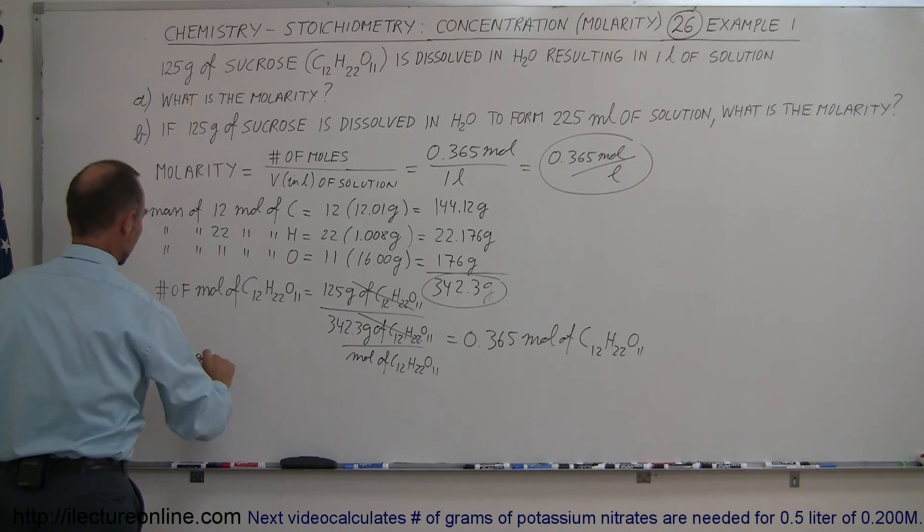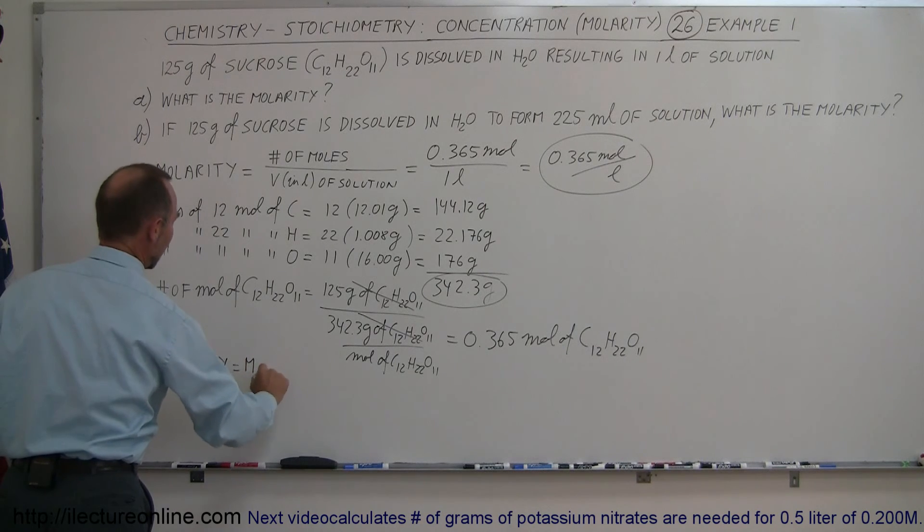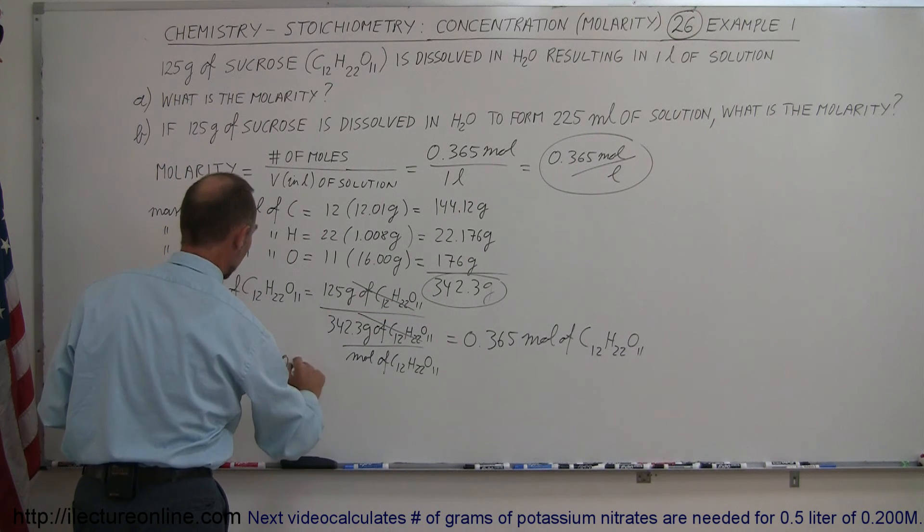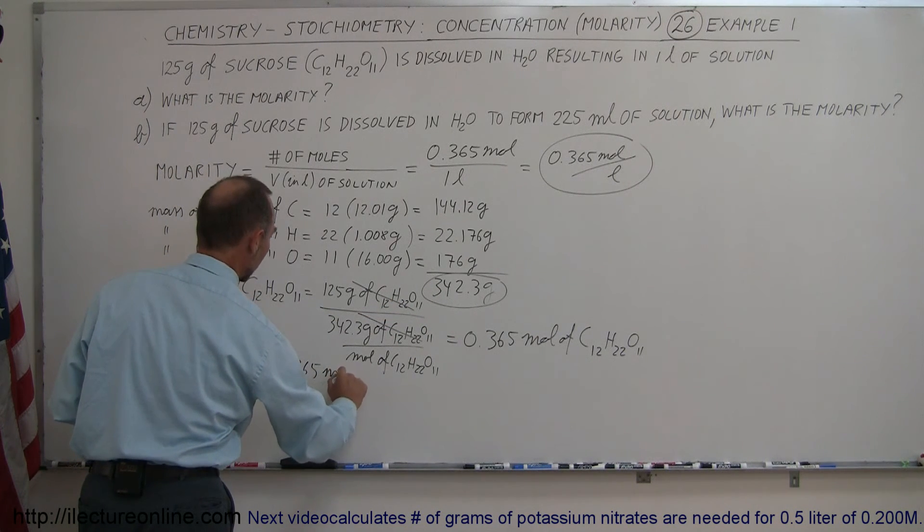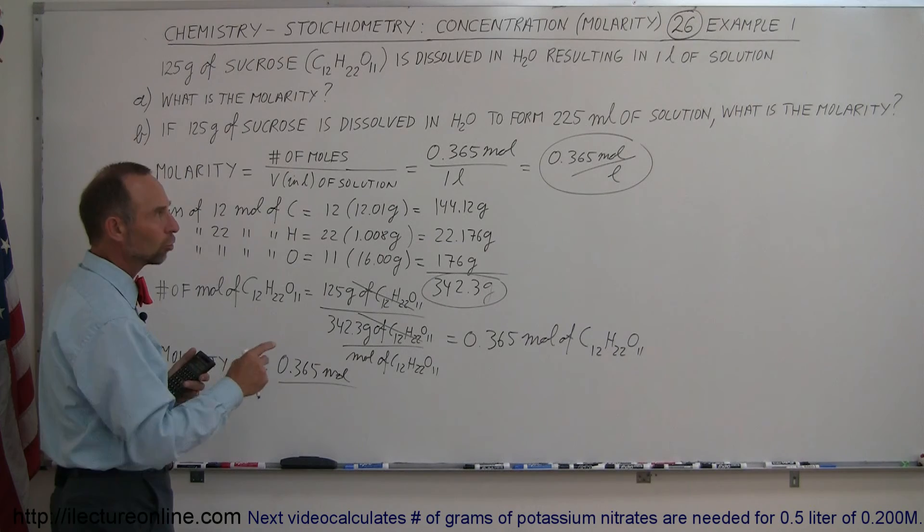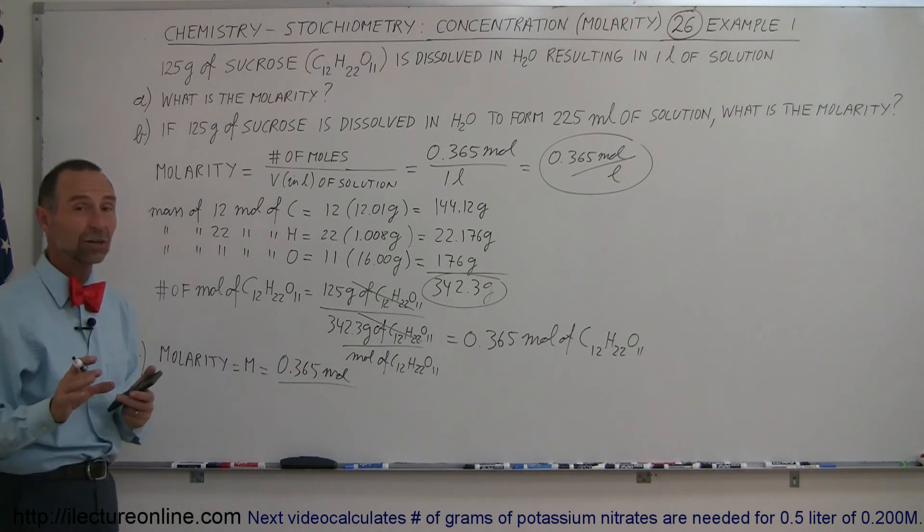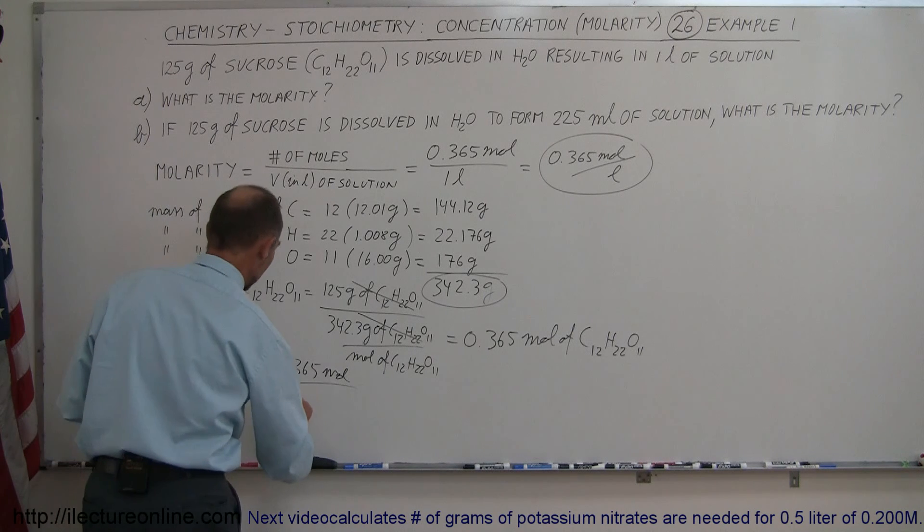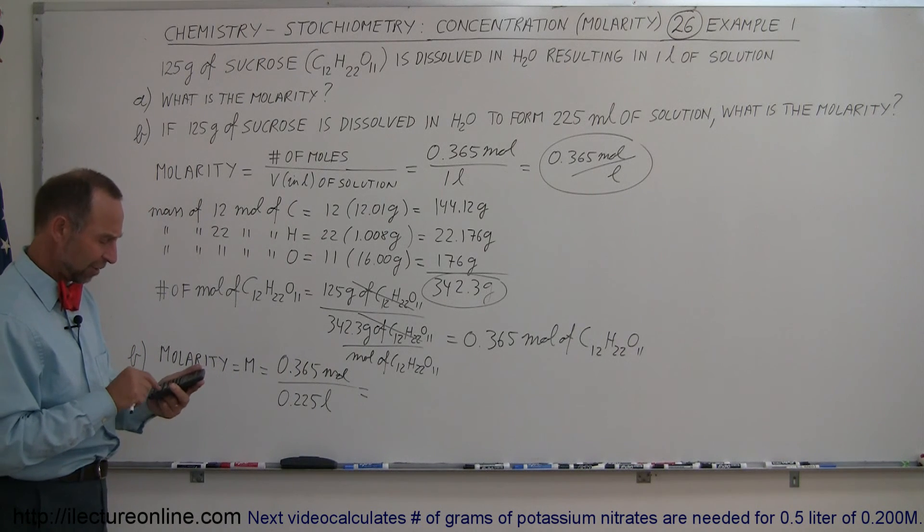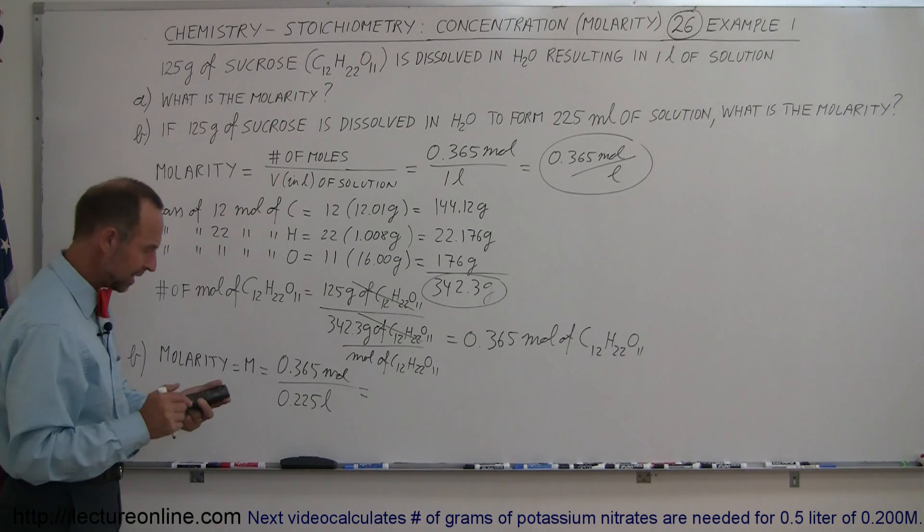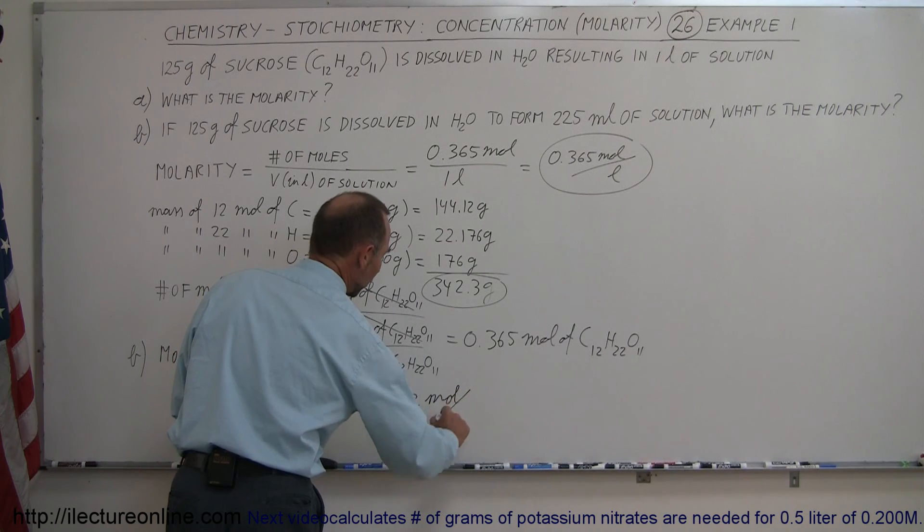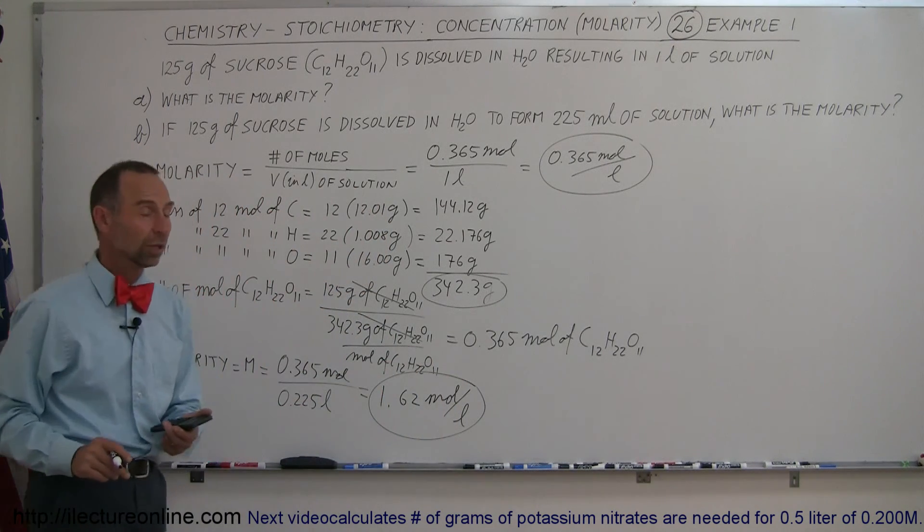So here then, for part B, the molarity, which is the concentration, which is in M, so we use the letter M to indicate molarity, is equal to the number of moles, which will be the same, 0.365 moles, divided by the total solution, or the volume of total solution in liters, so 225 milliliters, milli stands for 1-1000, so converted to liters would be 0.225 liters. So in this case, we have 0.365 divided by 0.225 equals, in that case, we have a molarity of 1.62, that would be moles per liter. So that would be the concentration in that solution, it would be the number of moles of sucrose per liter solution.